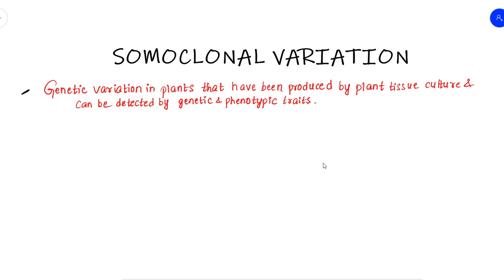The definition of somaclonal variation: 'Genetic variation in plants that have been produced by plant tissue culture, and can be detected by genetic and phenotypic traits, is called somaclonal variation.' Here in somaclonal, we can also have variation — genetic variation is produced in plants through plant tissue culture.